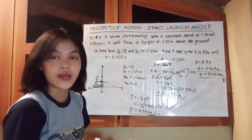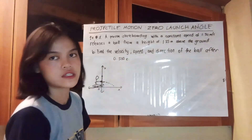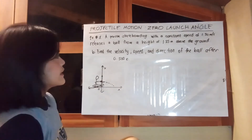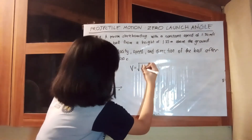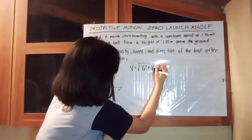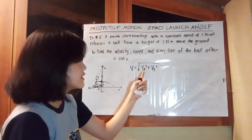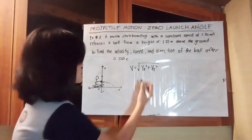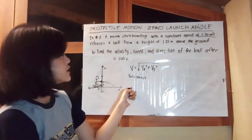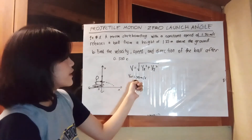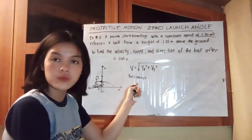Now let's move forward to answering our second question: finding the velocity and direction of the ball after 0.500 seconds. To find speed, we use the formula: speed equals the square root of vₓ squared plus v_y squared. Our vₓ is already known — it's 1.30 meters per second — and it did not change because the problem states constant speed, so the final velocity in x is still 1.30 meters per second.